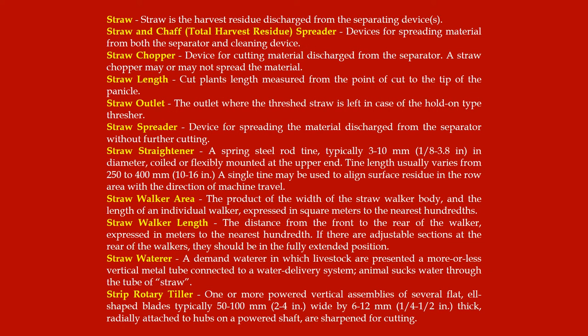Straw: the harvest residue discharged from the separating devices. Straw and chaff: total harvest residue; spreader devices for spreading material from both the separator and cleaning device. Straw chopper: device for cutting material discharged from the separator; a straw chopper may or may not spread the material. Straw length: cut plants' length measured from the point of cut to the tip of the panicle. Straw outlet: the outlet where threshed straw is left in case of hold-on type threshers.